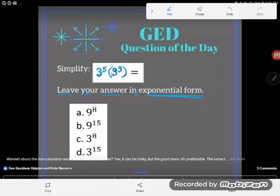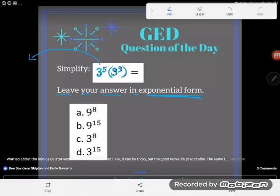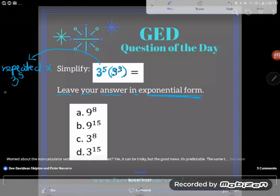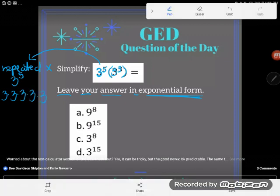So I'm going to pretend like I forgot the nice shortcut and I'm figuring this problem out. One thing I know is what an exponent means. I know that an exponent means the same as repeated multiplication. I know that if 3 to the fifth power means the same as 5 threes multiplying.